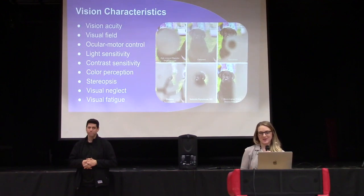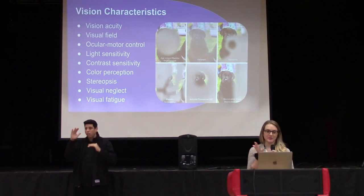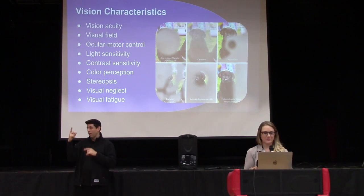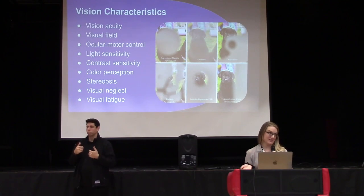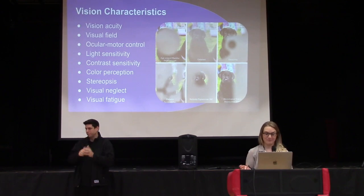Other types of vision loss you might see include field losses, ocular motor control difficulties, light sensitivity, a need for high contrast, color perception challenges, visual neglect, and fatigue. This is not an exhaustive list — these are just some of the things you might come across, and they are all very different.